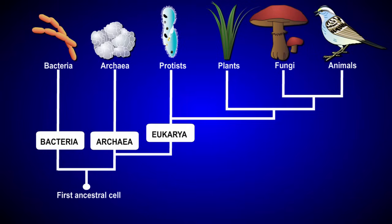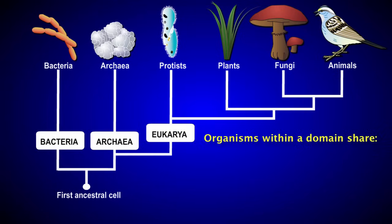At the broadest level, all life on Earth can be assigned into one of three major groups called domains: domain bacteria, domain archaea, and domain eukarya. While the diversity of life within each of these domains is vast, organisms in the domain share certain characteristics, such as similar cell structures and related sequences of ribosomal RNA.